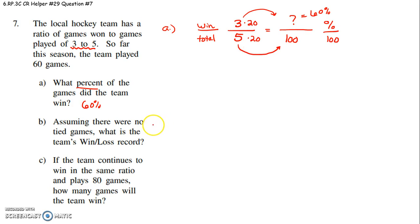Assuming there were no tie games, what is the team's win-loss record? Okay, now we have to use this 60. So for letter B, win to total equals win to total. We know this fact: they win three out of every five games they play. So the question is, how many did they win out of their 60 games? Well, you multiply 5 by 12 to get 60.